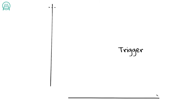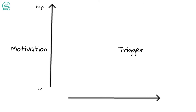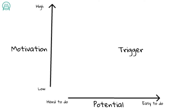You can visualize this model in two dimensions. On the vertical axis is the level of motivation for a behavior or action, and it can range from high to low. On the horizontal axis is the potential to do a behavior — it's also a continuum. On the right side is high ability, high potential, and I'll label that as easy to do. On the left side of this axis are behaviors or actions that are hard to do.